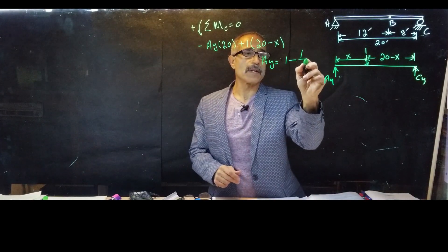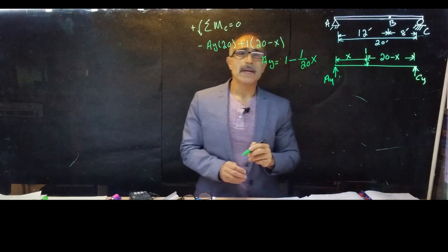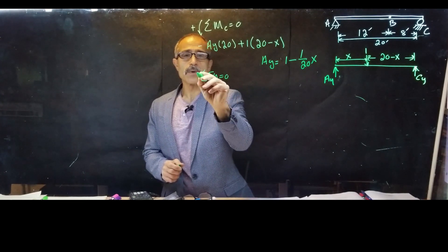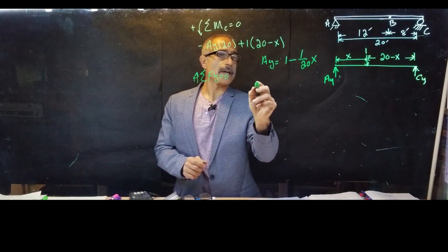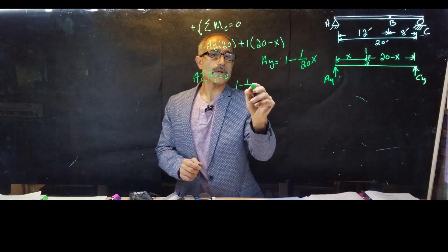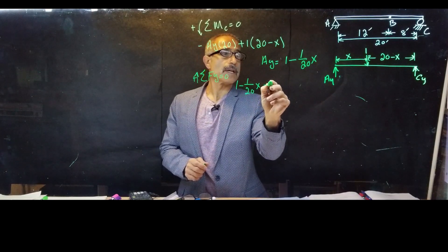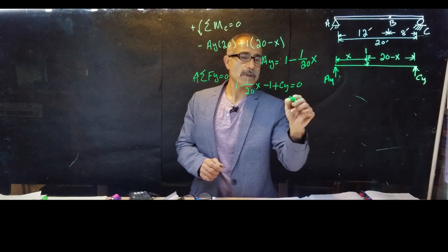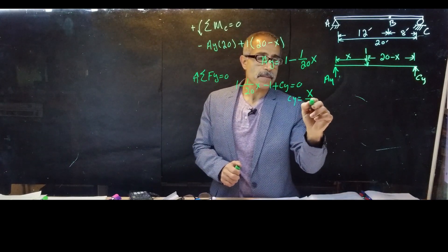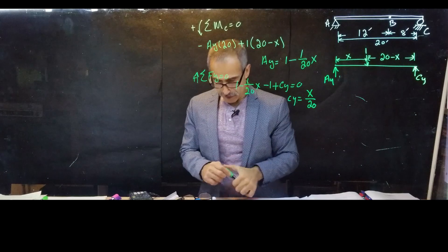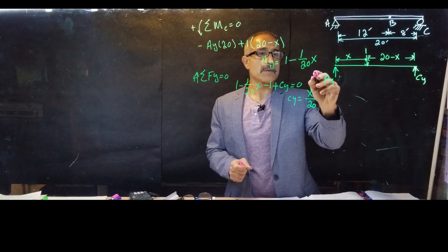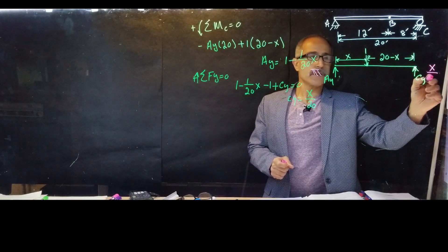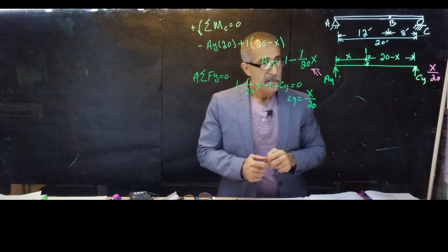Now let's find C_Y. Summation of forces in the Y direction equals zero; going up is positive. I have A_Y which is (1 minus (1/20)X), minus the unit load of 1, plus C_Y equals zero. That gives me C_Y equals X/20. So A_Y = 1 − (1/20)X and C_Y = X/20.